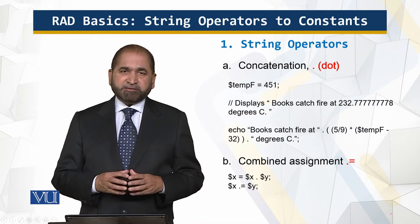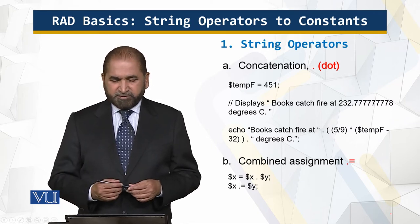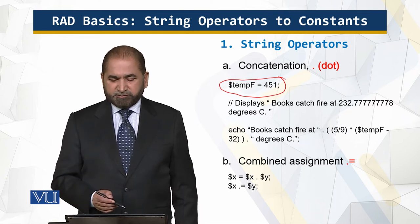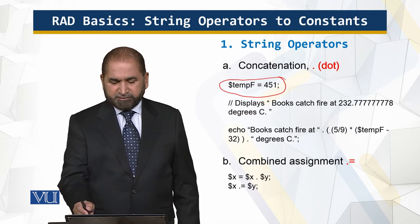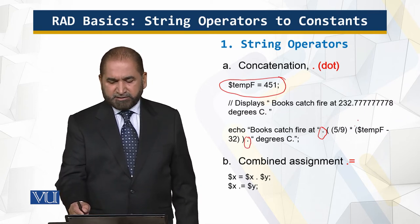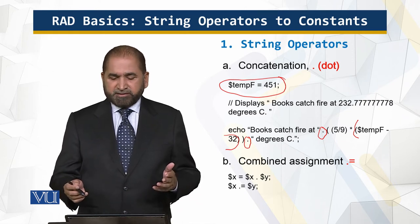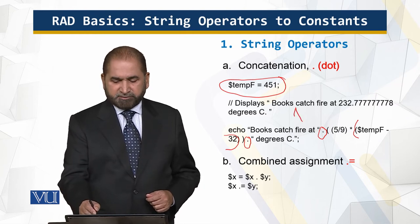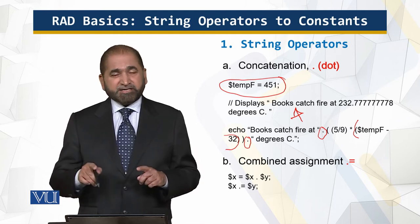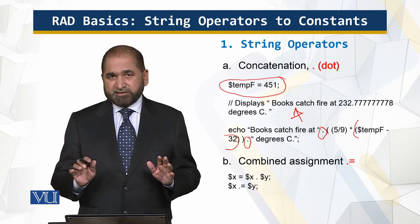The string operator is represented by a dot, which is the concatenation operator. As you can see on your screen, this is a very interesting example. Here I have declared a variable, temperature in Fahrenheit, which is an integer variable. Then I have concatenation operators used here, and there is an expression which is evaluated. The result we get is that the mathematical operation is converted into a string because of the concatenation operator.